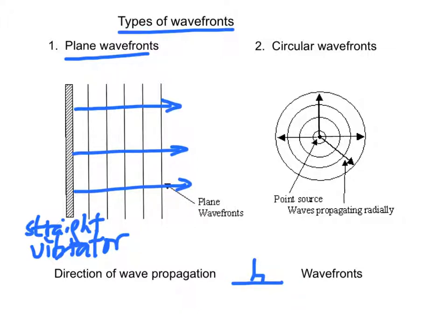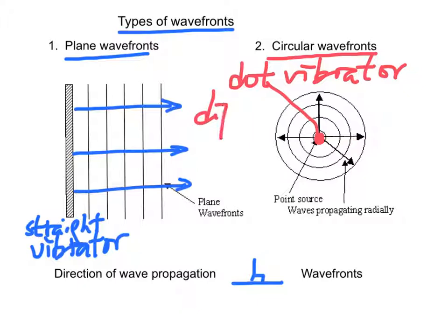Another kind of wave front is circular wave front. In fact, circular wave fronts are usually generated by a point vibrator, or we say a dipper. Again, the direction of wave propagation is perpendicular to the wave fronts.